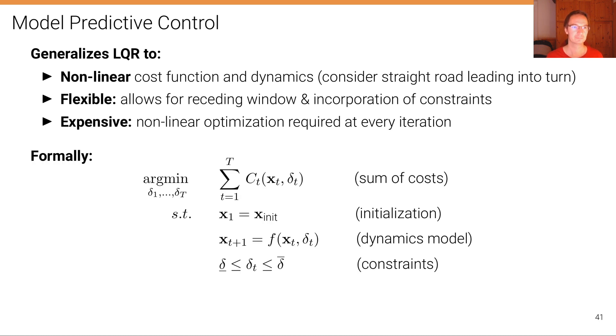Formally, model predictive control can be formalized using these equations. The goal is to minimize a sum of cost functions with respect to the input steering angles from the current time step one to T times into the future, where each time we have a potentially different cost function.